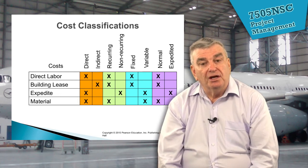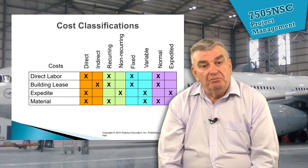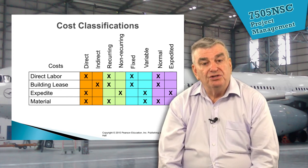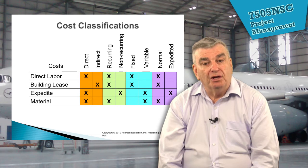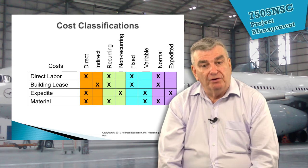We relate all of those different cost classifications to, for example, direct labour, a building lease, an expedited project, and the materials themselves. As we'll see in the project, the way in which the cost classifications are applied to the different cost elements varies.